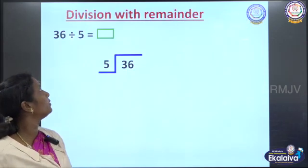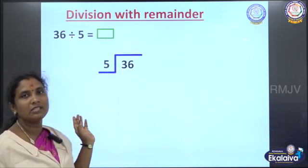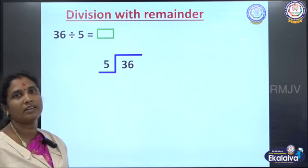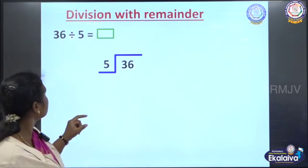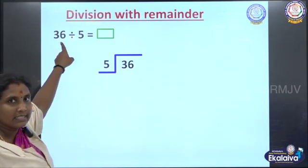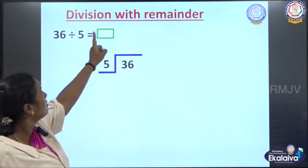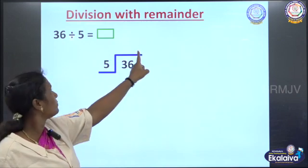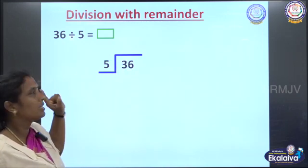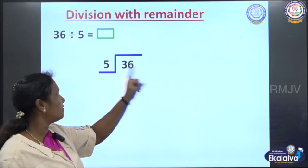Now we are going to see division with remainder. In the last sum we did not get any remainder — only 0. Now let us see a remainder example. We are going to divide 36 by 5 and find the answer. For that, we have to write the sum: 36 divided by 5. Next, we have to write the 5 times table.